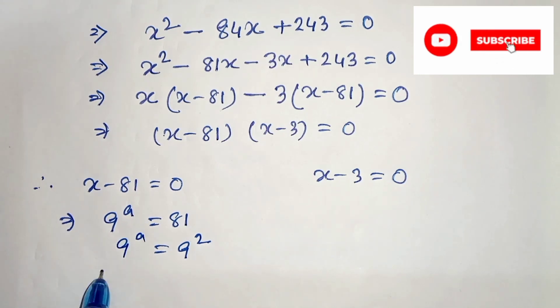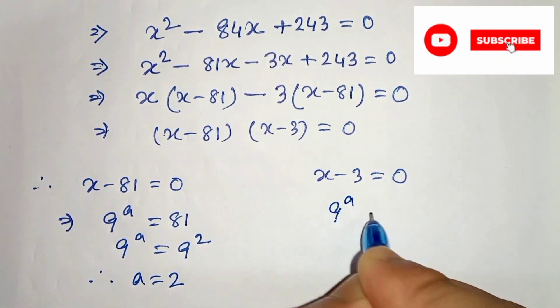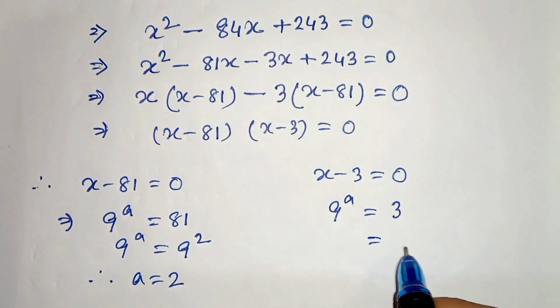So comparing this we can get a equals 2, and from here we can get 9 to the power a equals 3. 3 can be written as 9 to the power half, so if we compare this we will get a equals half.